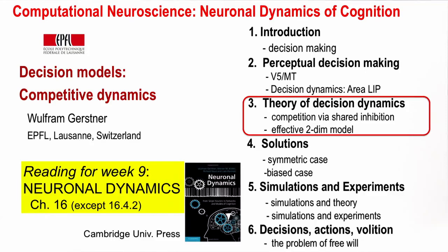Welcome back to Computational Neuroscience, Neural Dynamics of Cognition. I talked about experimental data related to decisions, but now let's turn to the theory of decision dynamics. We'll work with populations of neurons that share inhibition.